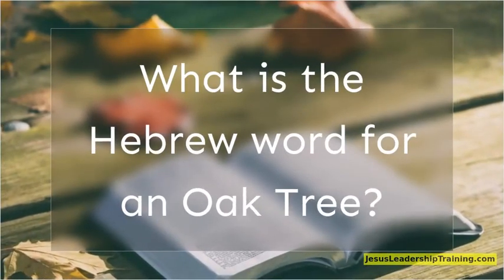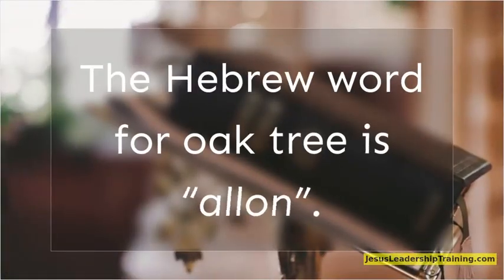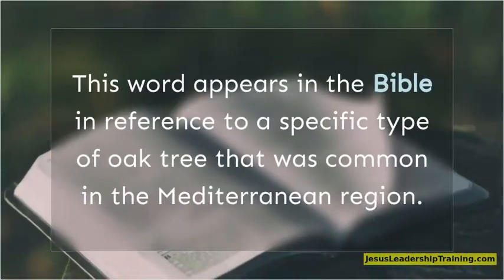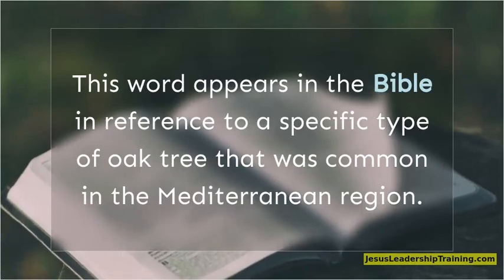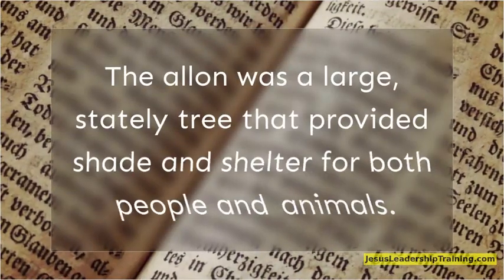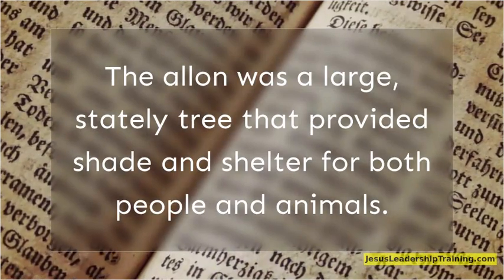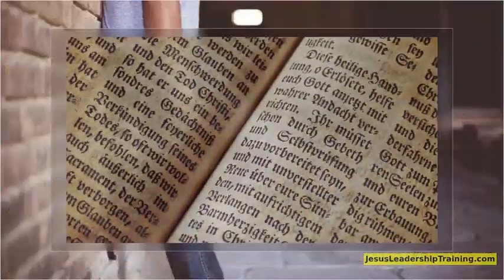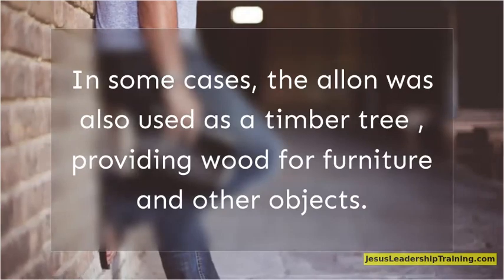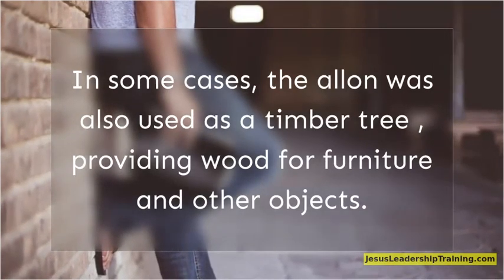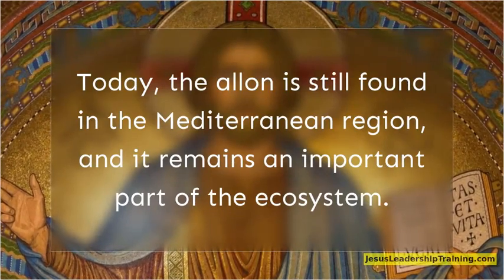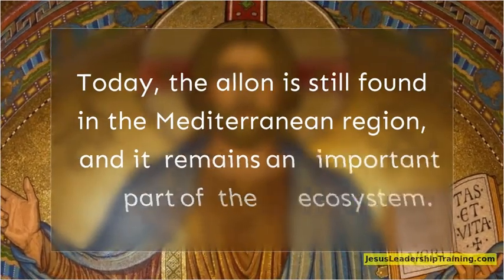What is the Hebrew word for an oak tree? The Hebrew word for oak tree is 'alone.' This word appears in the Bible in reference to a specific type of oak tree that was common in the Mediterranean region. The alone was a large, stately tree that provided shade and shelter for both people and animals. In some cases, the alone was also used as a timber tree, providing wood for furniture and other objects. Today, the alone is still found in the Mediterranean region, and it remains an important part of the ecosystem.